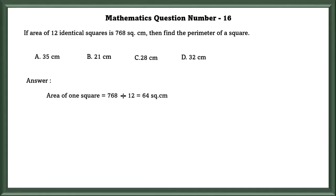In order to find the area of 1 square, we have to divide the total square centimeters by the number of squares, which is equal to 64 square centimeters. In order to find the side of 1 square, we put it in the formula A into A. So, 8 times 8 equals 64.